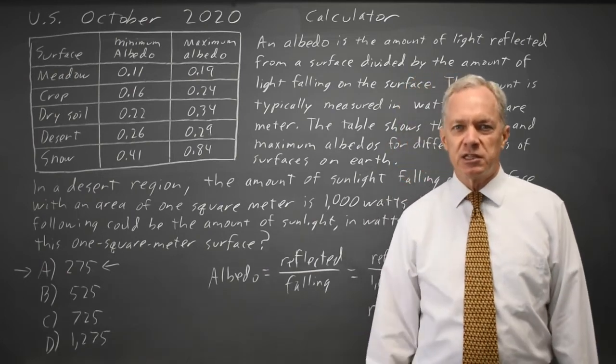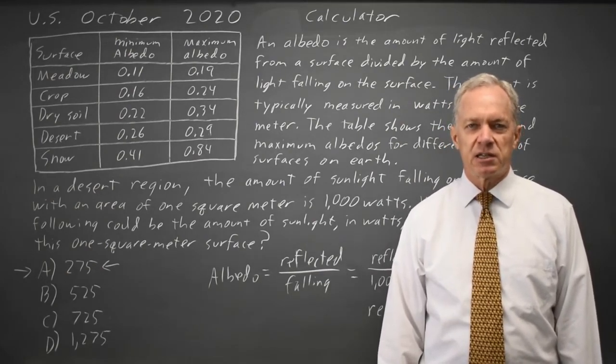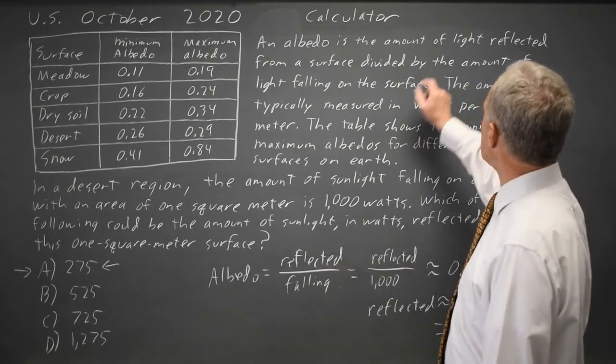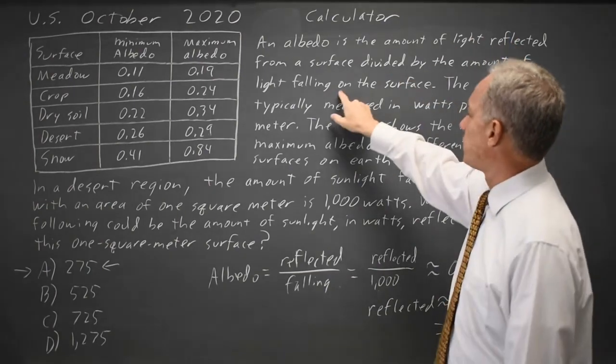The key was to read the definition of albedo and apply that definition exactly as a ratio of light reflected over light falling, because it says light reflected divided by the amount of light falling on the surface.